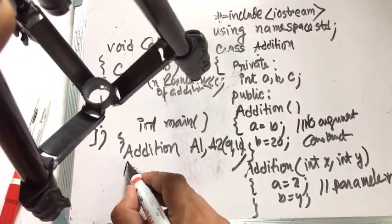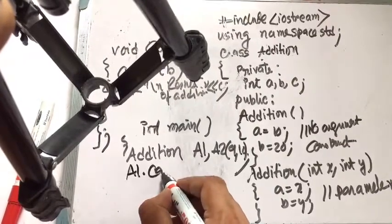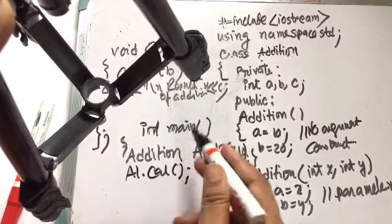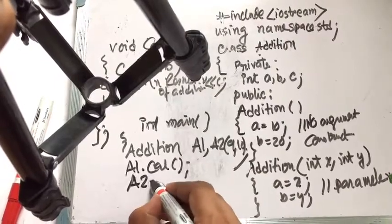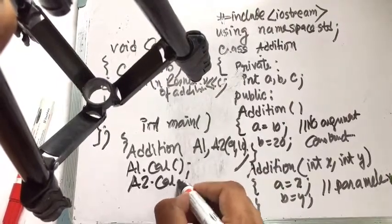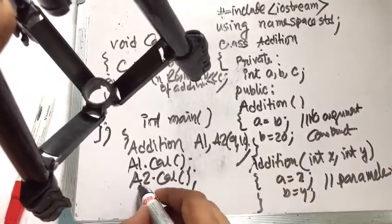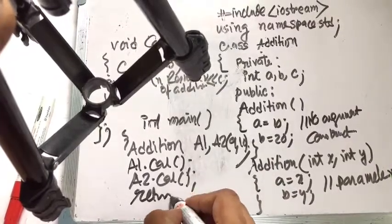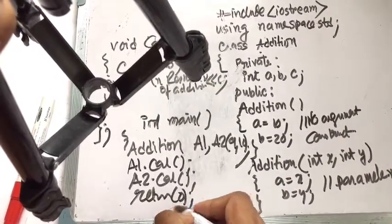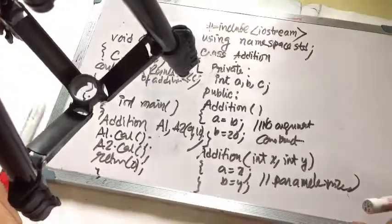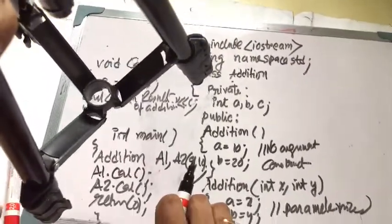When we call a1.cal it activates the calculation function for object a1. When we call a2.cal it activates the calculation function for object a2. Then return 0 stops the program.